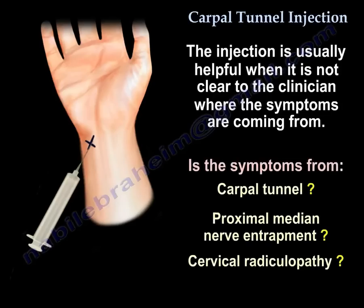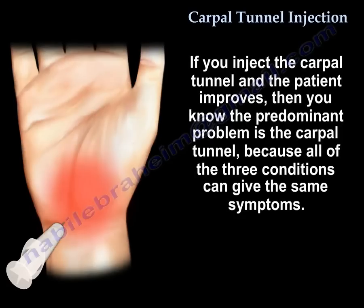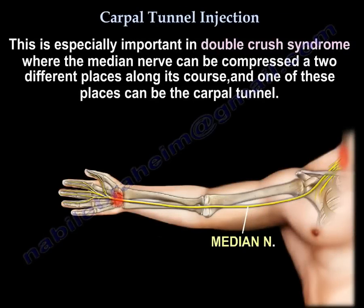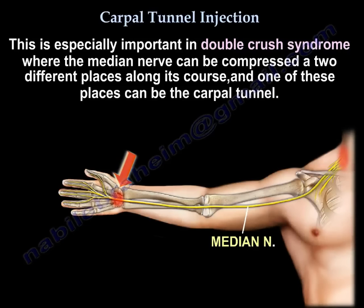The injection is usually helpful when it is not clear to the clinician where the symptoms are coming from — is it carpal tunnel, or is it proximal median nerve entrapment, or is it cervical radiculopathy? If you inject the carpal tunnel and the patient improves, then you know the predominant problem is the carpal tunnel, because all three conditions can give the same symptoms. That's especially important in double crush syndrome, where the nerve can be compressed at two different places along its course, and one of them can be the carpal tunnel.